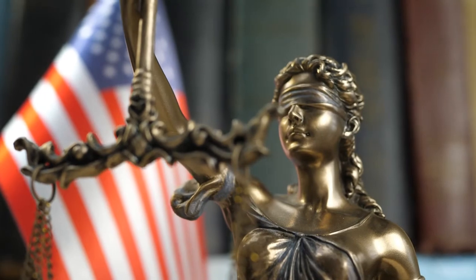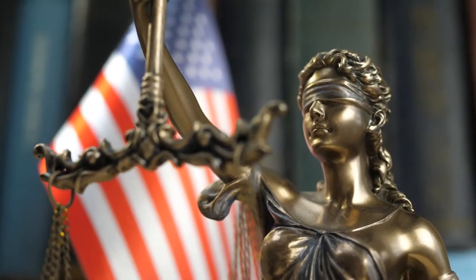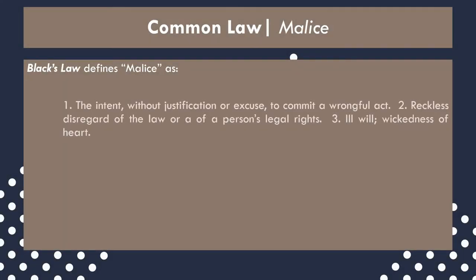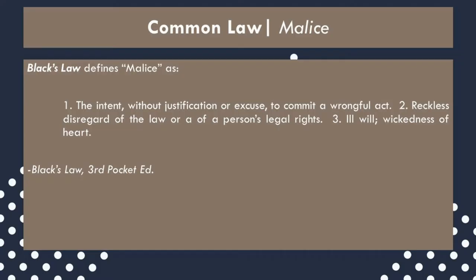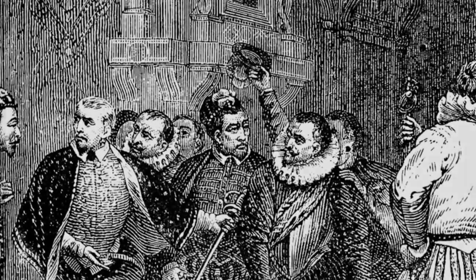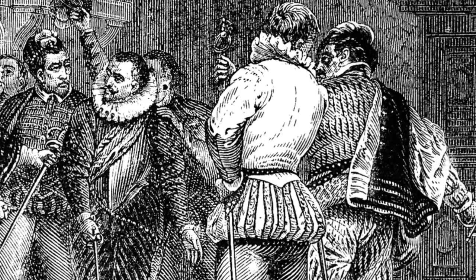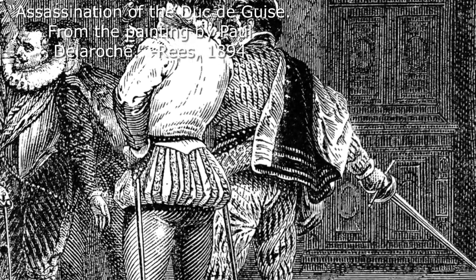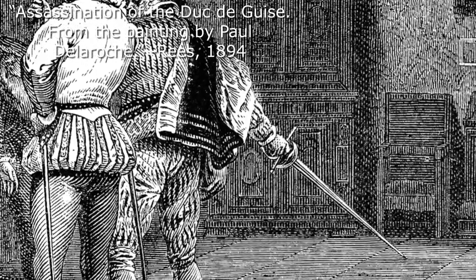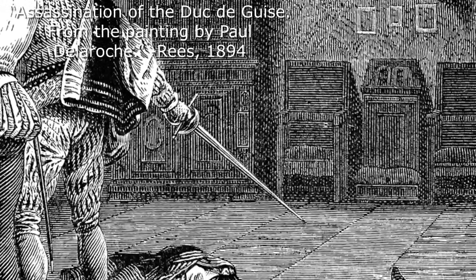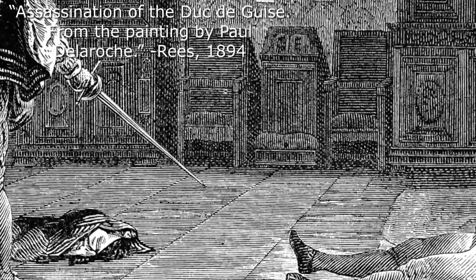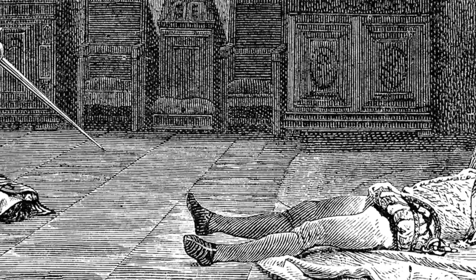Malice is a particular kind of mens rea. It appears similar to specific intent but is distinguished from it in notable ways. Black's Law defines malice as: "the intent, without justification or excuse, to commit a wrongful act; reckless disregard of the law or of a person's legal rights; ill will, or wickedness of the heart." Malice only applies to common law murder and arson. For historical reasons, this mens rea category was created to deny the specific intent defenses to those accused of these crimes. Also, while murder requires malice aforethought, do not confuse the mens rea requirement of that crime, specific intent, with the one we are discussing here.